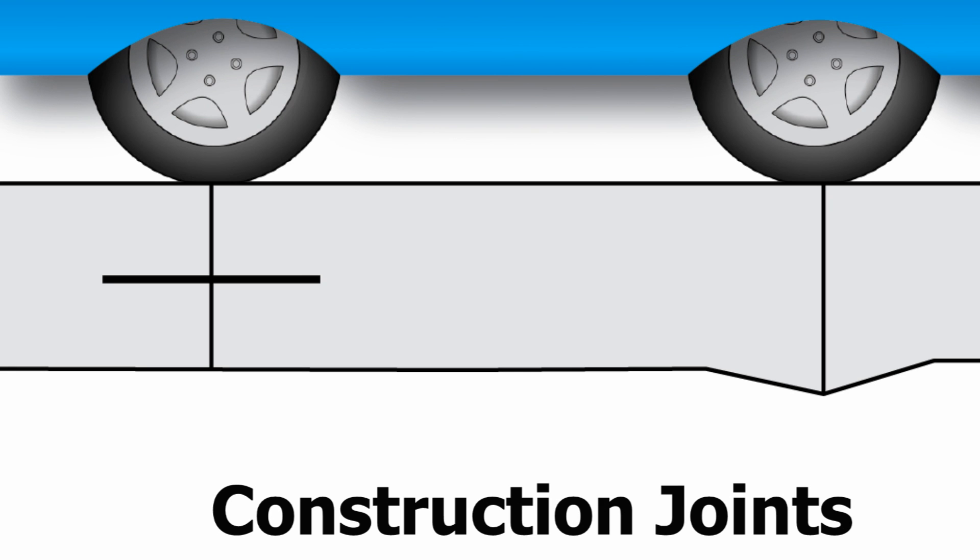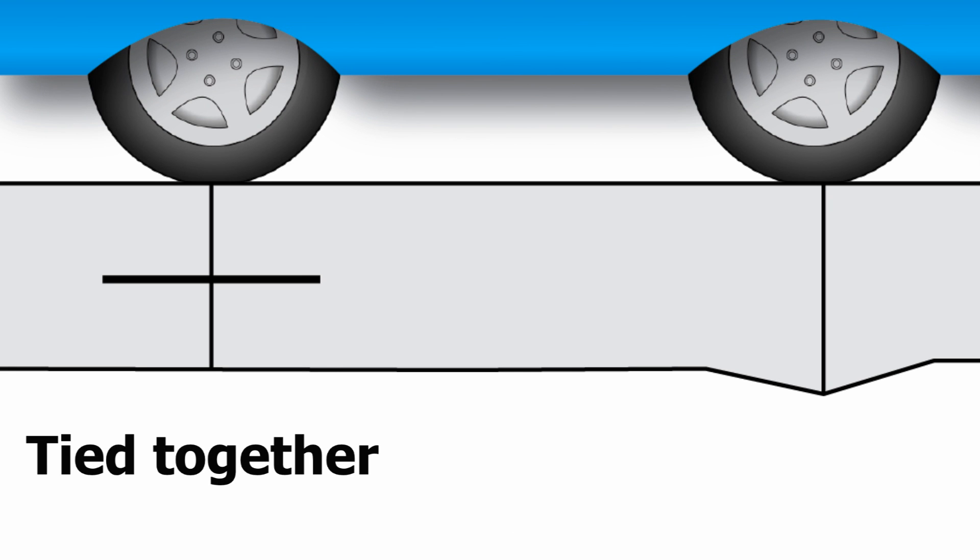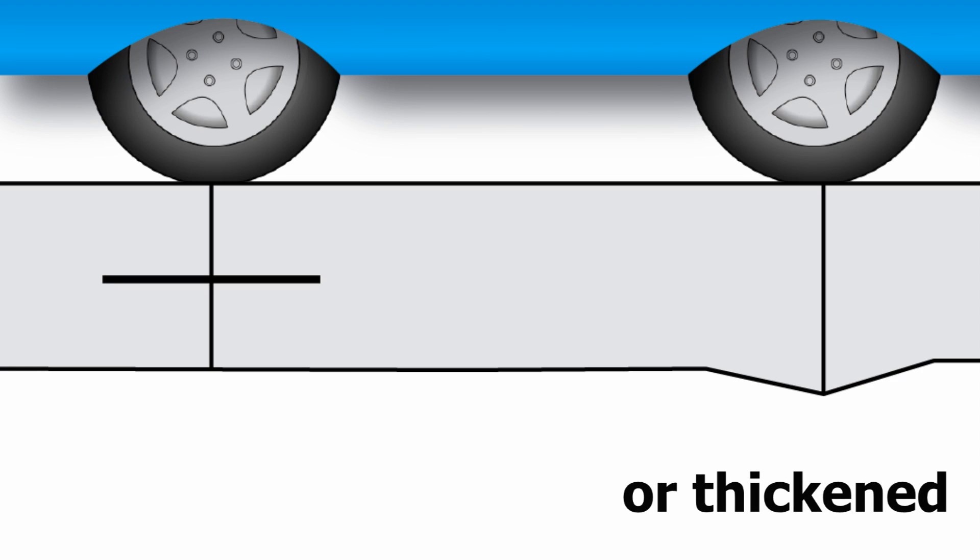Construction joints are joints where the construction needs to stop, such as between work days. The adjacent slabs should be tied together or thickened due to load transfer from one slab to the other.